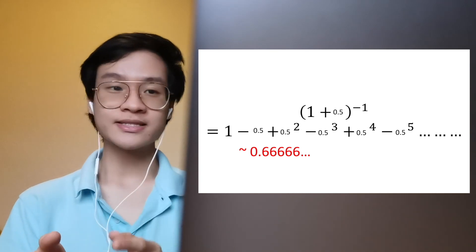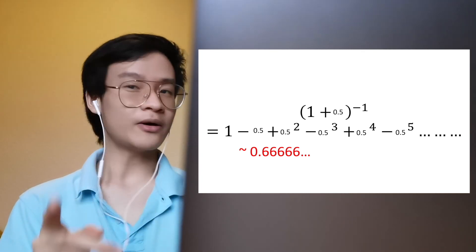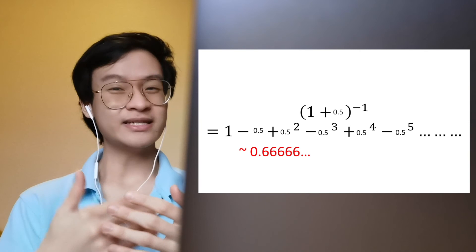So in conclusion, binomial expansion allows us to approximate certain values without the calculator. For that to occur, certain convergence is needed. For convergence to occur, each term needs to get smaller and smaller. And for that to occur, the modulus of x should be less than 1. That's it, thank you!